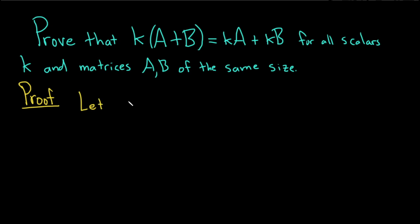Let a_ij or simply aij denote the ij entry of the matrix A, and bij denote the ij entry of the matrix B.